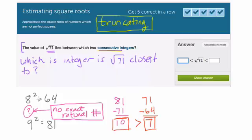So it's closer to 8. So here, it's between 8 and 9, but it's closer to 8. That's just because 8 squared is closer to 71 than 9 squared is. And that's a pretty good approach to take. All right, thanks.